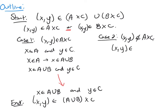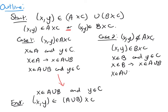In Case 2, (x, y) is not in A cross C, so it has to be in B cross C. That means x is in B and y is in C. But since x is in B, I know that x is in A union B. So now I have that x is in A union B and y is in C — that's what I needed to get to. I've finished the outline of this proof.